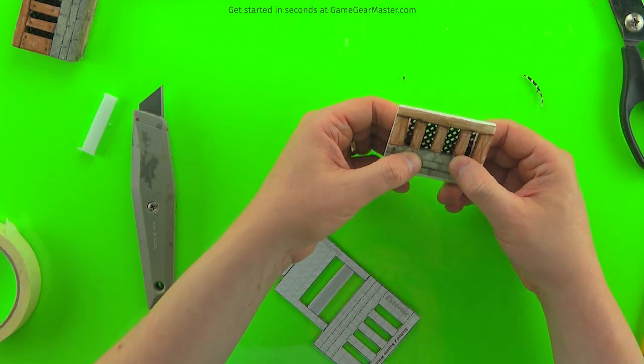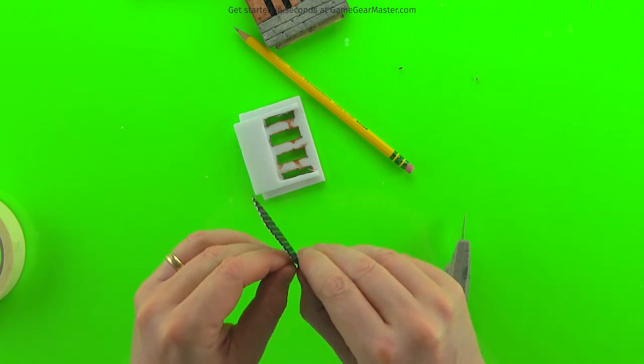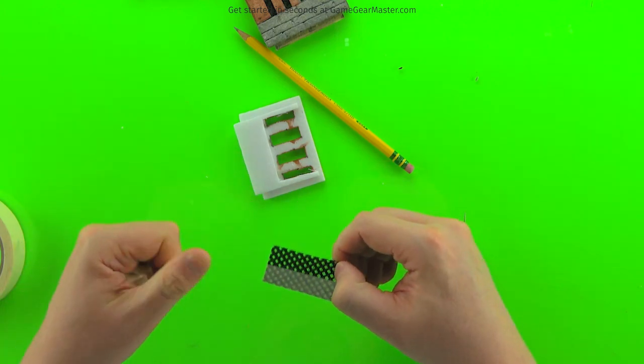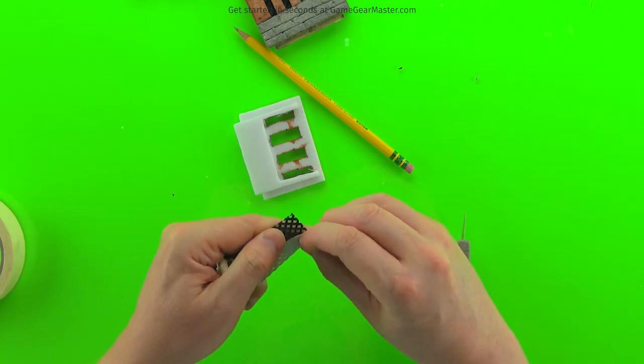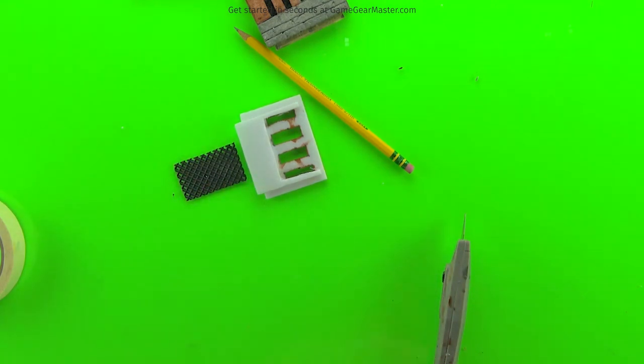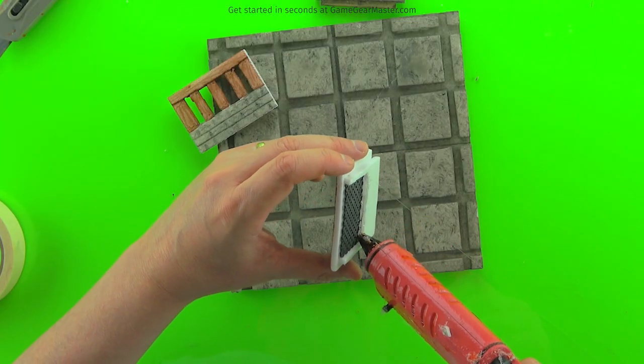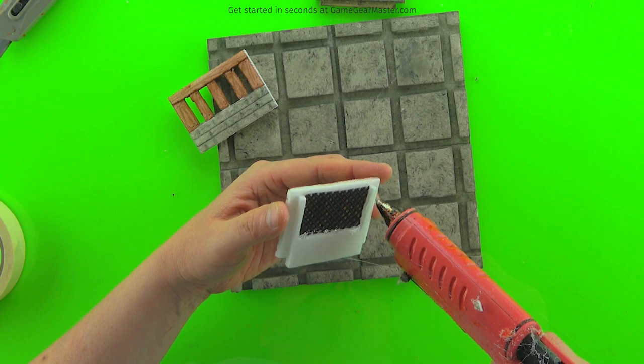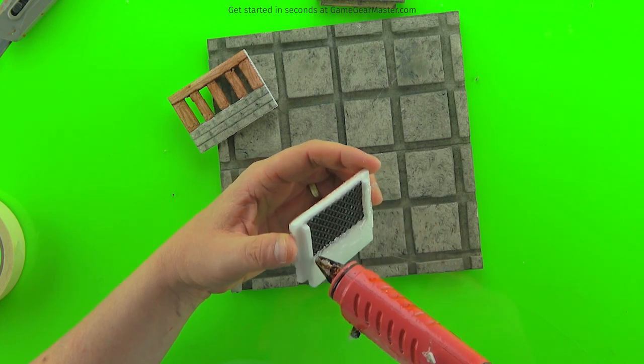There we go. That looks pretty good. And then last but not least, make sure to peel off that masking tape. It's going to be very hard to do that after you put the wall together. And I usually just put a little dab of hot glue on the bottom there to hold it in place. You don't need a whole lot for that window to stay in there.